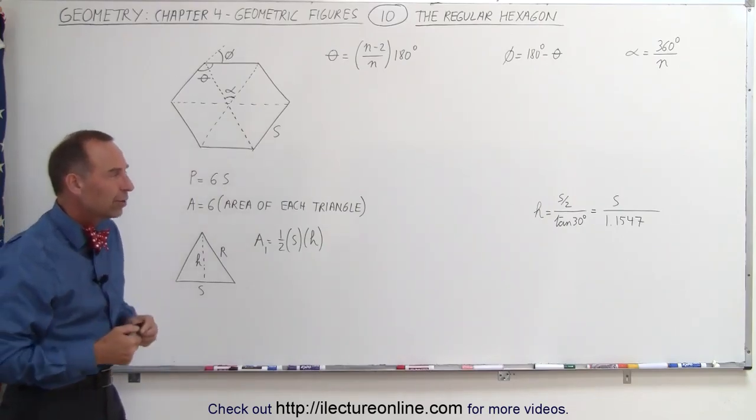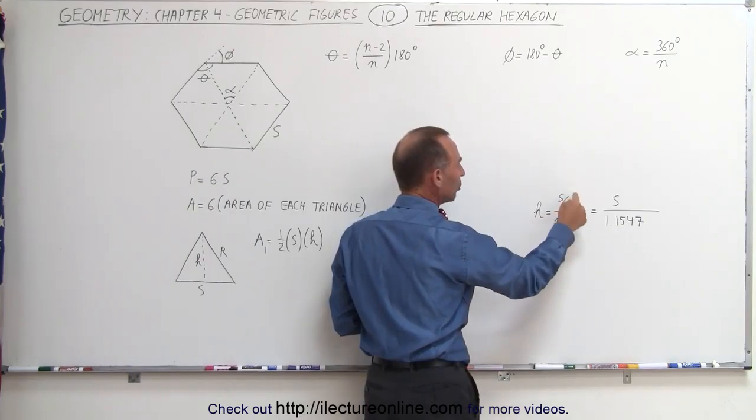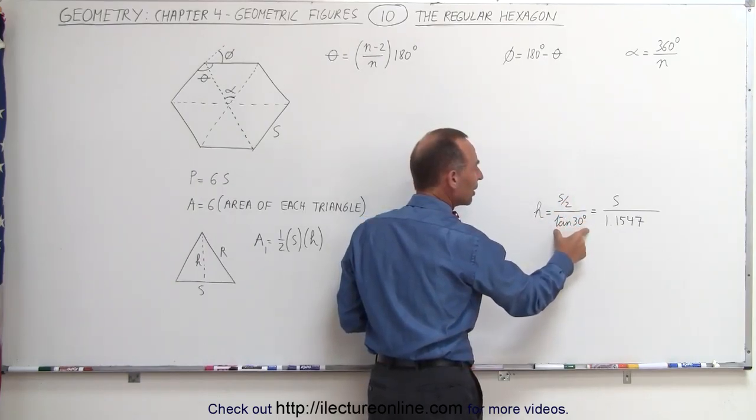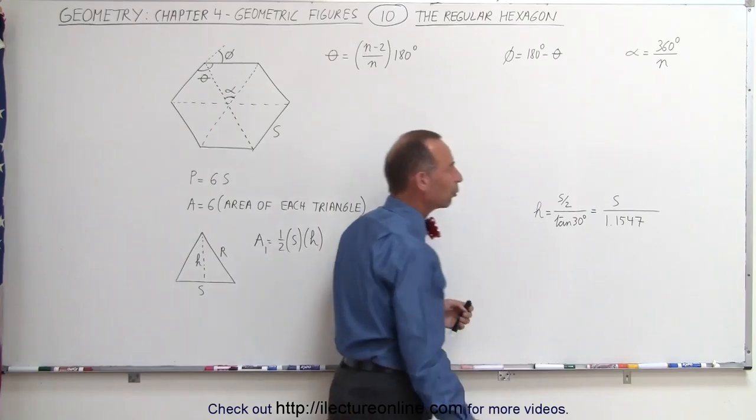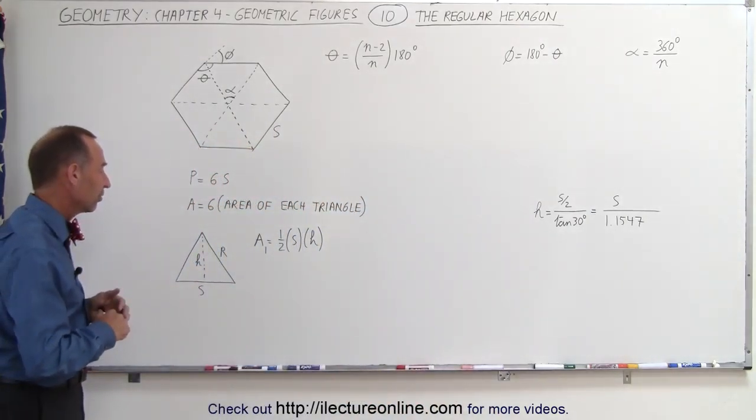And that's what you'll see later in the next video, that the relationship can be found by taking s divided by 2, divided by the tangent of 30 degrees, and it'll be s divided by 1.1547, accurate to four decimal places.